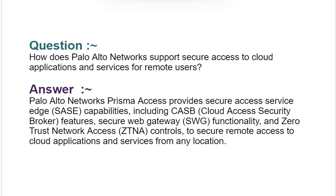Interview question: How does Palo Alto Networks support secure access to cloud applications and services for remote users? Your answer should be: Palo Alto Networks Prisma Access provides Secure Access Service Edge (SASE) capabilities, including Cloud Access Security Broker (CASB) features, Secure Web Gateway (SWG) functionality, and Zero Trust Network Access (ZTNA) controls to secure remote access to cloud applications and services from any location.